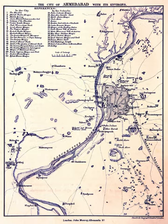1 May 1960 – Ahmedabad becomes the capital of the newly formed Gujarat State. 1961 – Opening of Indian Institute of Management and National Institute of Design. 1961 – Oil was discovered at Ankleshwar in Gujarat. 1962 – Opening of Nehru Bridge; School of Architecture at CEPT began its first course. 1963 – Opening of Nagari Eye Hospital by Prime Minister Jawaharlal Nehru. 1966 – Opening of Dr. Vikram Sarabhai Community Science Centre. 1970 – Capital moved from Ahmedabad to Gandhinagar.